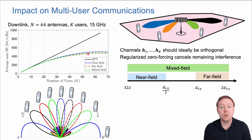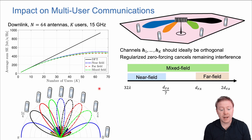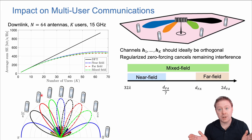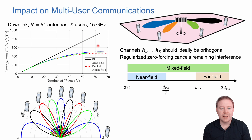Showing number of users versus average sum spectral efficiency, we have curves for mixed field, far field, and near field—not too different from each other, with small variations. The black curve shows the ideal case where user channels are always orthogonal, achievable by placing users at the exact spatial DFT angle locations, giving always-orthogonal channels. This is a far-field upper bound unlikely in practice. Even without reaching the upper bound, the near-field curve is slightly better than the others.